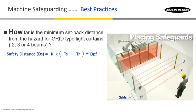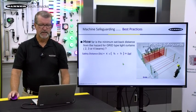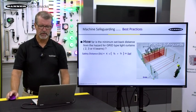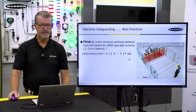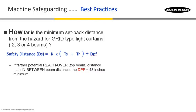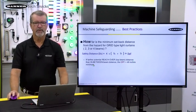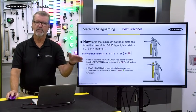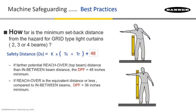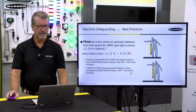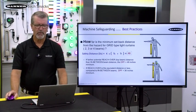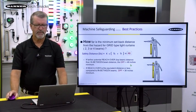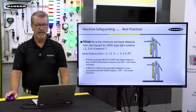Let's talk about the minimum setback distance from the hazard for grids. Grids are the type of devices designed to detect your torso — they are either two, three, or four beams, as shown in this slide. The safety distance formula is the same. If the distance you can reach in by reaching over the top beam is farther than reaching between the beams, then the DPF in the formula must be 48 inches. On the other hand, if the reachover is equivalent to or less than reaching between beams, the DPF is 36 inches minimum — so 36 inches if there's no advantage over the top beam, 48 if someone can reach over and gain more access.